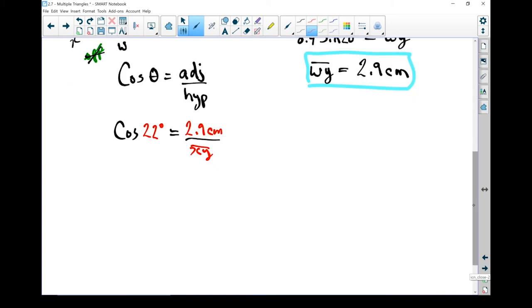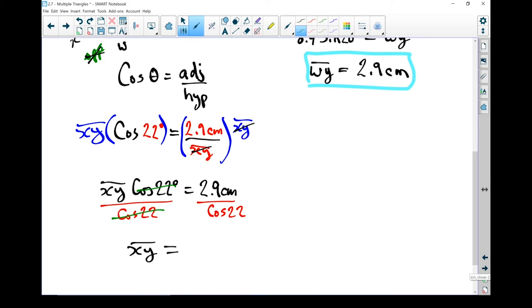All right. Let's do a couple of shortcuts as we're figuring this out. Instead of punching the numbers in, I'm going to times both sides by XY. I'm going to times that side by XY, which gives me XY times the cos 22 degrees equals, those two cancel each other out, 2.9 centimeters. I want to get XY all by itself. So I'm going to take both sides and divide it by cos of 22. These two pieces cancel each other out.